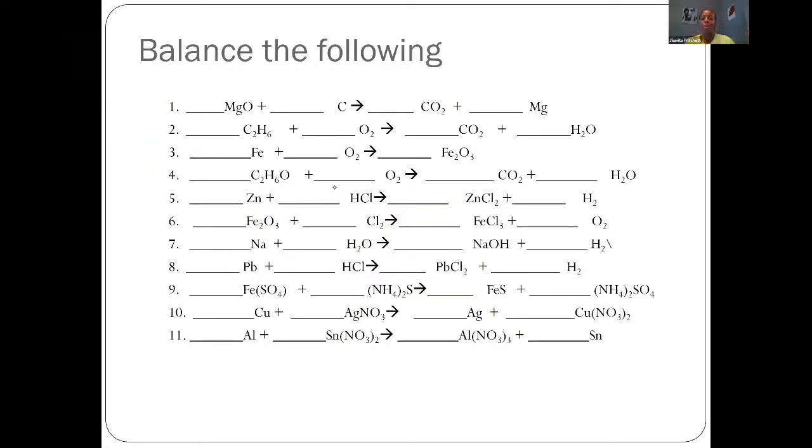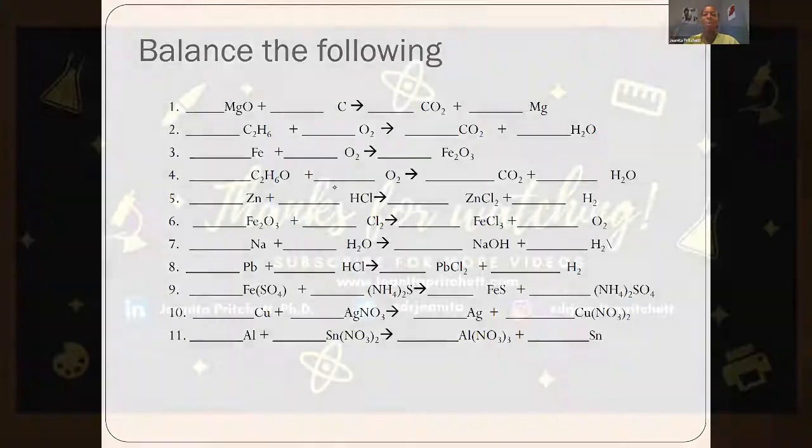There are more examples shown here, so I definitely encourage you to go through these. Try some balancing and practice listing the elements under the arrow, assigning the number of atoms you start with on both sides, then balancing them out. I hope this video helped you in learning what chemical equations are and how to balance them. Make sure you like, comment, and subscribe. I'll see you guys in the next video. Talk to you later. Bye-bye.